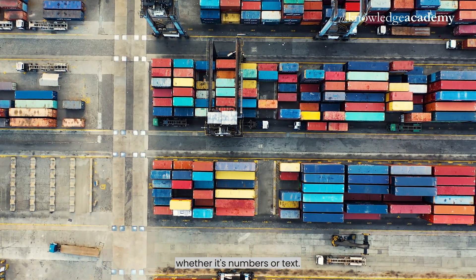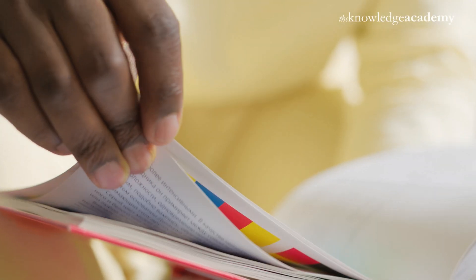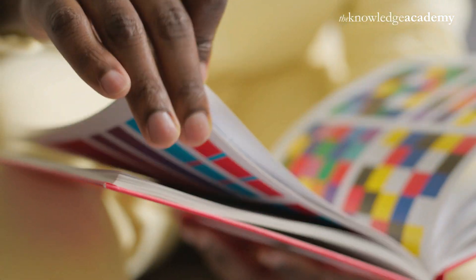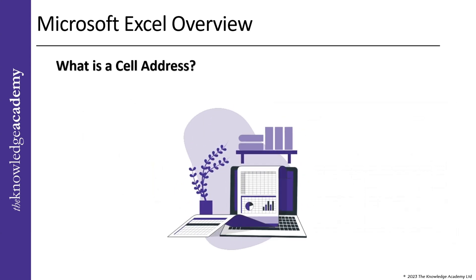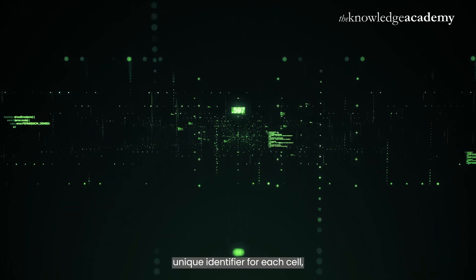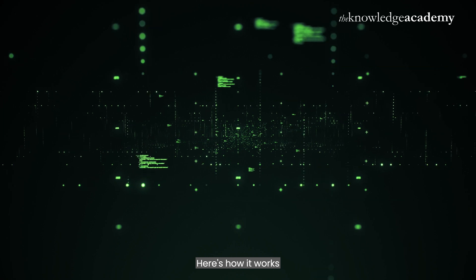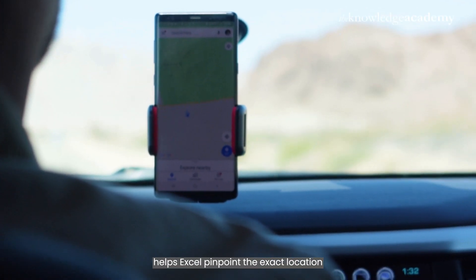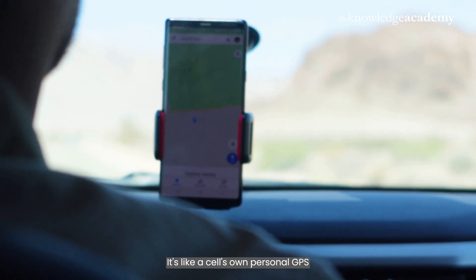You can think of a cell as a container where you can input your data, whether it's numbers or text. You can also copy, paste, and customize the cell's appearance, such as its size, text color, and background color. Now let's learn about the cell address — a unique identifier for each cell used to locate and reference it. The cell address consists of a combination of the column letter and row number, helping Excel pinpoint the exact location of the cell. It's like a cell's own personal GPS.